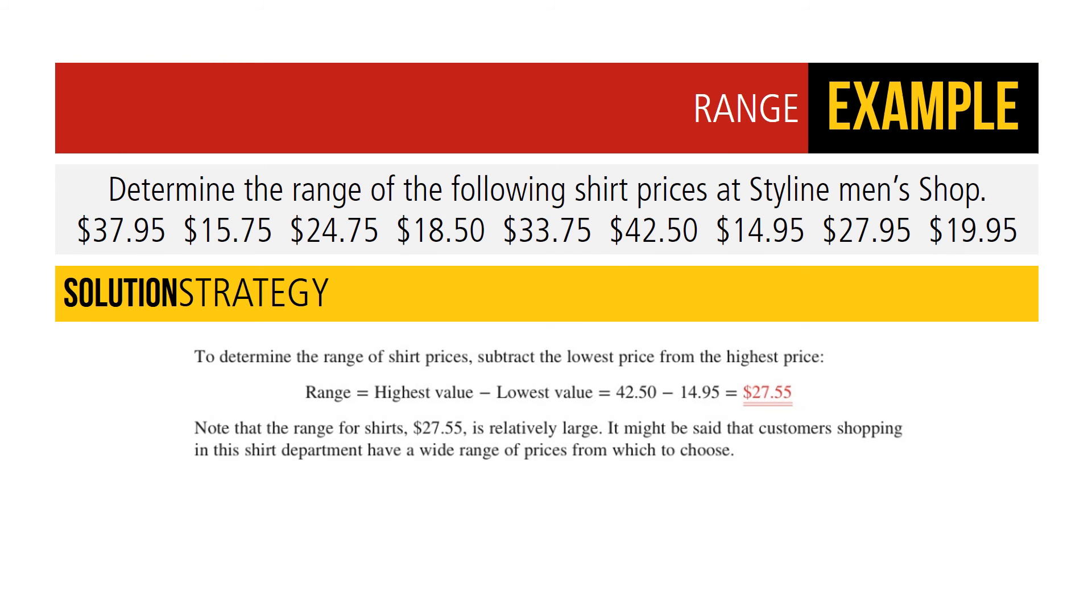Determine the range for the following shirt prices from a men's shop. The solution strategy here is as follows: To determine the range of shirt prices, subtract the lowest price from the highest price. So in this case it would be $42.50, the highest price, minus $14.95, the lowest price. This equals $27.55. Note that the range for shirts, $27.55, is relatively large. It might be said that customers shopping in this shirt department have a wide range of prices from which to choose.